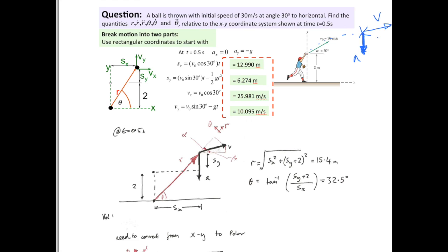And, equally, its speed has the x-component Vx, which is 25.981, and Vy, which is this one here, which is just over 10 meters per second. So, just by application of the SUVAT equations, we can find the position and the velocity after 0.5 seconds.